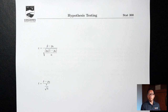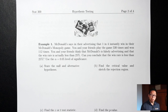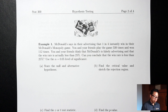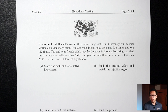The first page has formulas I'll need for this lecture, so let me skip it and come back when we need it. Example 1: McDonald's says in their advertising that 1 in 4 instantly wins in their McDonald's Monopoly game. You and your friends play the game 530 times and won 112 times. You think McDonald's is falsely advertising and that the win rate is actually less than 25%. Can you conclude that the win rate is less than 25%? Use alpha equals 0.05 level of significance.